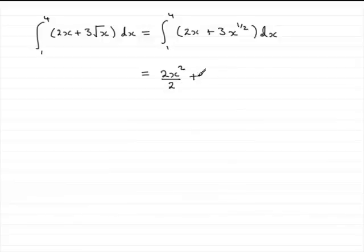On to the second term, add 1 to the power, so if you add 1 to the power half, you get 1 and a half. Try and write it as a top-heavy fraction, 3 over 2, and then divide by the new power, 3 over 2.